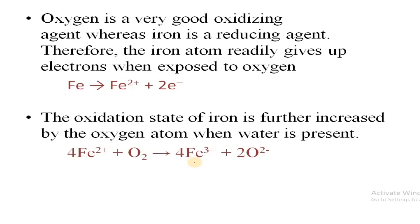Let's look at some of the chemical reactions responsible for rusting. Oxygen is a very good oxidizing agent whereas iron is a very good reducing agent. In this case, two electrons are released by iron and gained by oxygen to give ferrous iron (Fe²⁺). In the presence of moisture in the environment, it can further undergo oxidation to give ferric iron (Fe³⁺).